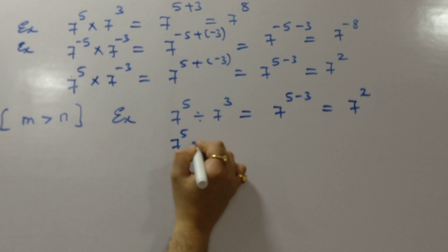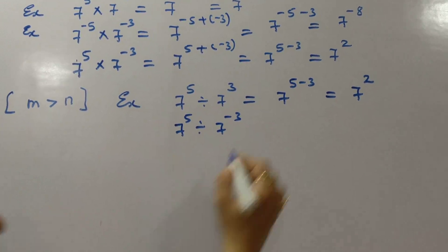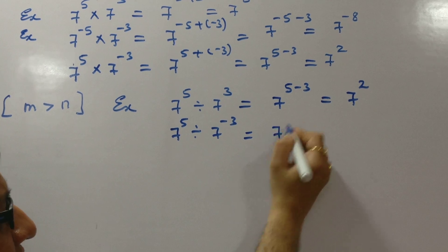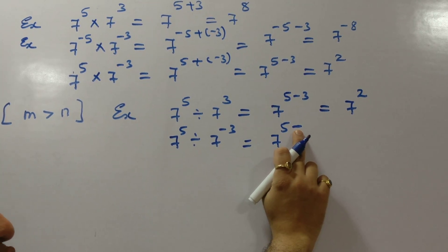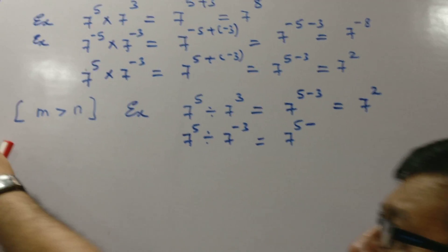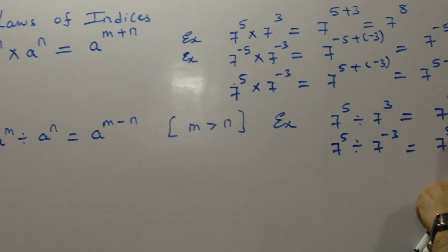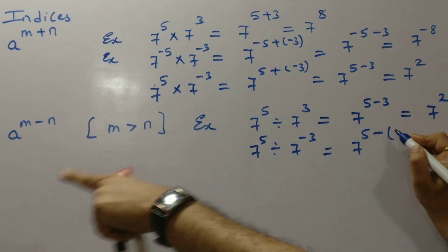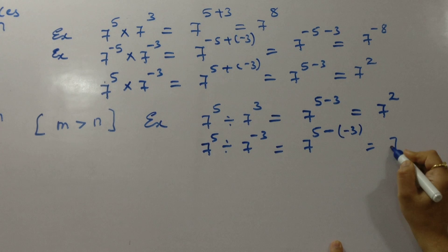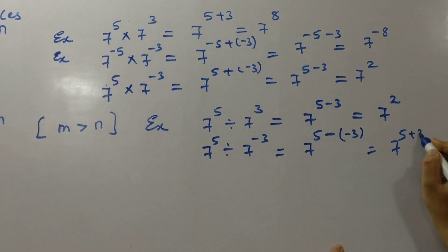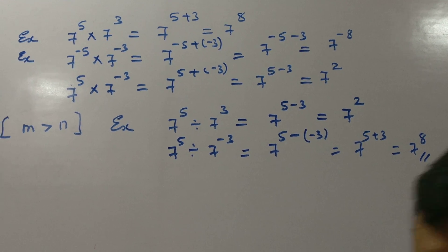Let's take 1 positive and 1 negative for clarity. Say, 7 raised to 5 divided by 7 raised to minus 3. The answer will be 7 raised to 5 minus of minus 3. The definition sign is M minus N, and our N itself is minus 3. So the answer is 7 raised to 5 plus 3, which is 7 raised to 8.